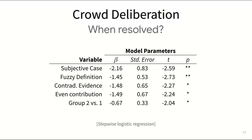The ability of resolving a disagreement also depended on different factors. One important factor was the reason why workers disagreed in the first place. If they disagreed over a particularly subjective case, or due to a fuzzy definition or contradictory evidence, it was harder for the group to reach consensus.